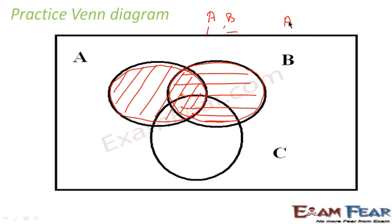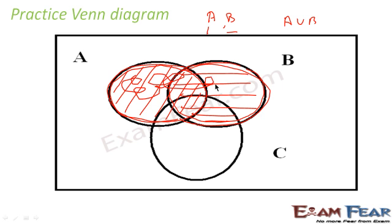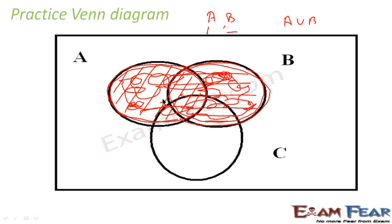When I say A union B, I see elements which are part of either A or B. So the whole bigger set — anything that is in red — is A union B. The whole thing is A union B, because these are the elements which are either part of A or part of B.